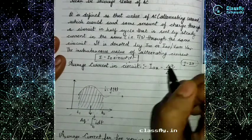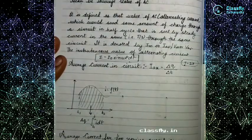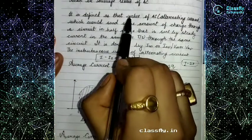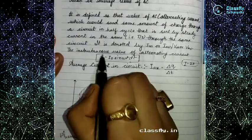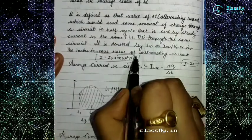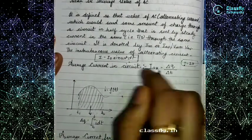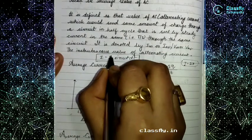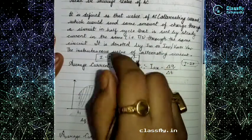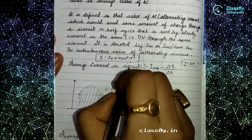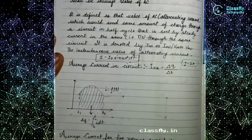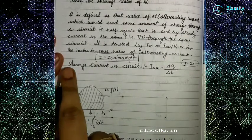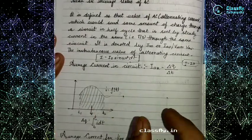If a full cycle is T, then our half cycle will be T/2. There is an instantaneous value of alternating current, so we are doing the alternating current derivation. It will be I = I₀ sin(ωt), where I₀ is the peak or maximum current. We have taken this sine wave, so we are working with sin(ωt) dt.